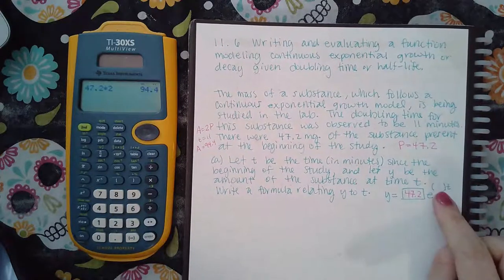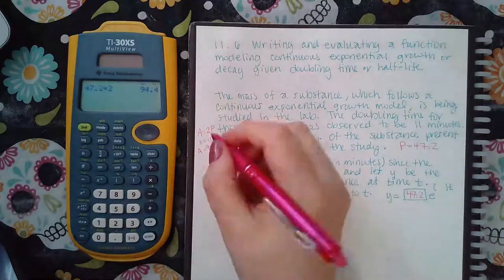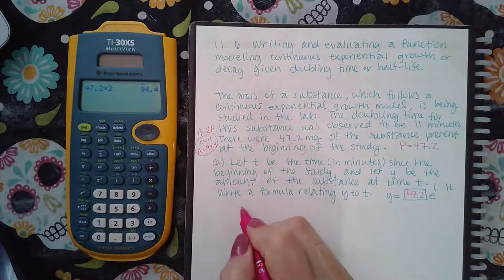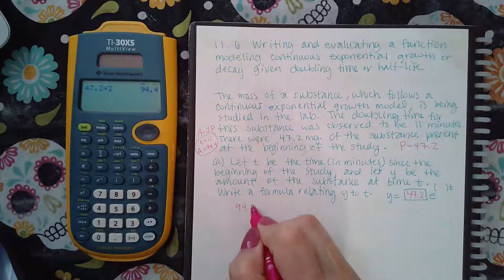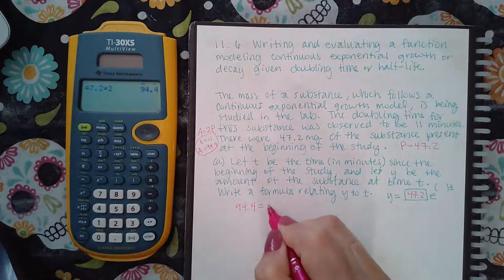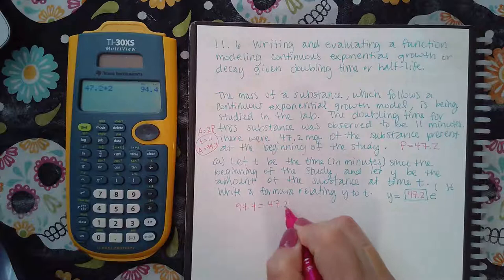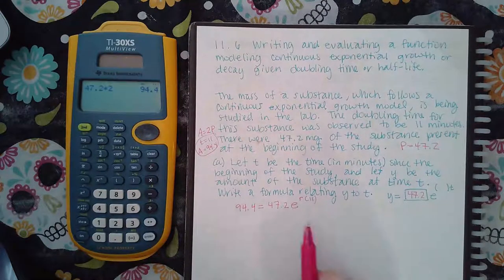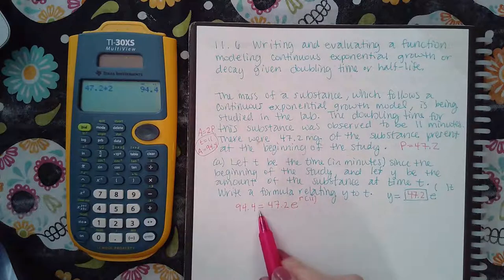But in order for me to find the rate, I'm going to have to use this information that they gave me. So if I plug everything in, then I'm going to have A equals P E to the R times T. And after 11 minutes, that's when I get 94.4.